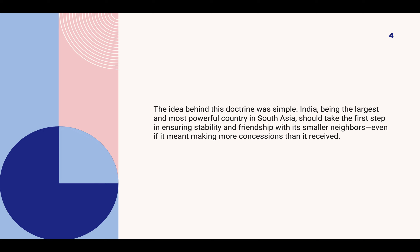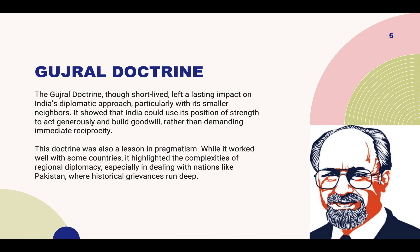Nepal, a close neighbour, also saw the positive effects of this doctrine. Gujral believed that India should not impose any restrictions on Nepal's external relationships, even though India had considerable influence in Nepal's politics and economic matters. In 1997, under this doctrine, India waived the Security Clause of the 1950 Indo-Nepal Treaty of Peace and Friendship, which was a significant step towards addressing Nepal's concerns about its sovereignty and independence.